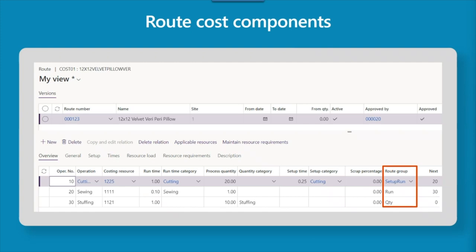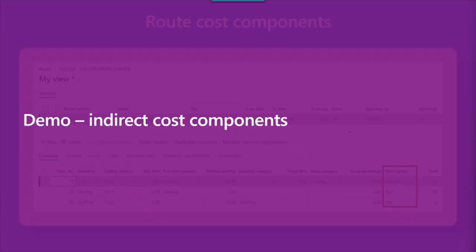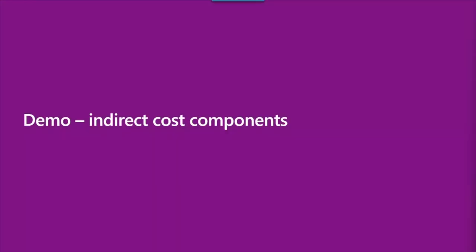Sometimes companies choose not to set up routes for labor costs and instead use a service item on the BOM to allocate labor costs to the production order. This is not a best practice for manufacturing costing, as it does not give you the same control over labor cost calculations, actual tracking, variance analysis, or indirect cost calculations. The last component contributing to production cost is indirect costs or overheads, so let's switch over to the system and take a closer look at the setup for indirect costs in the costing sheet.